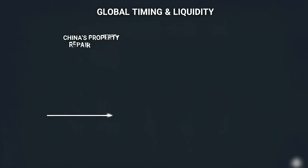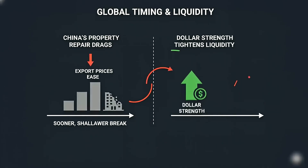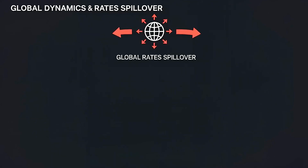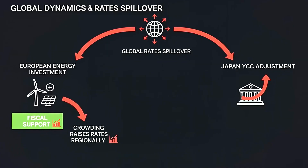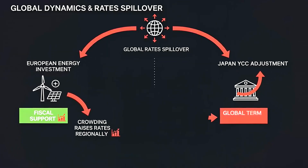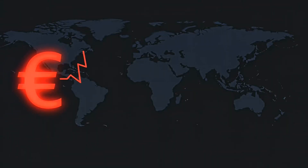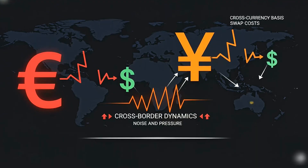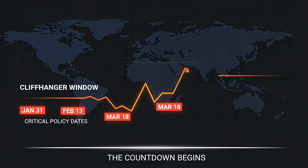Check the timing on the global side. If China's property repair drags, export prices may ease, but dollar strength tightens global liquidity. If Europe accelerates energy investment with fiscal support, crowding raises rates regionally and spills over. If Japan adjusts yield curve control again, global term premium can lift. International desks add noise and pressure. Cross-border dynamics raise the floor under long yields. Coming up: the mid-script payoff and the cliffhanger that frames the window.